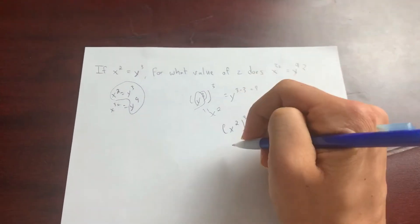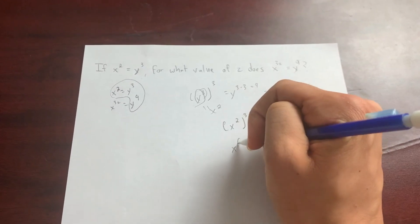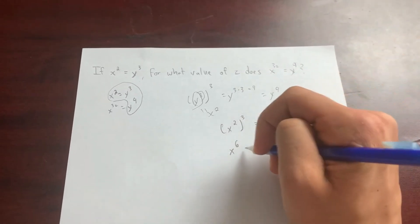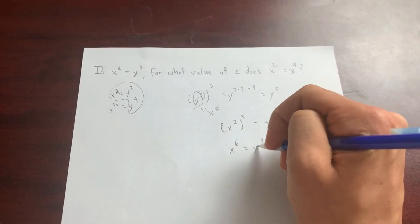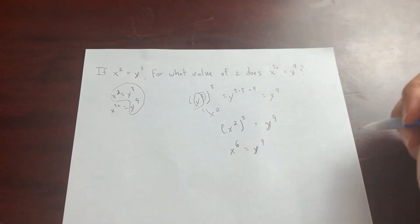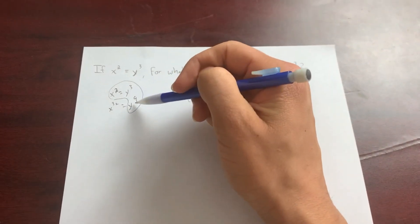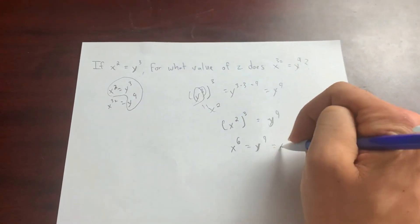And let's simplify this. This becomes x to the 6, because power to the power, you multiply 2 times 3 is 6, equals y to the 9. And now what was I told by this relation? x to the 3z equals y to the 9, so this equals x to the 3z.